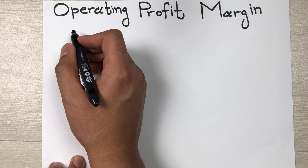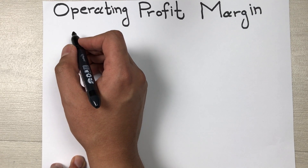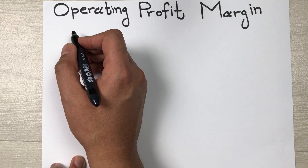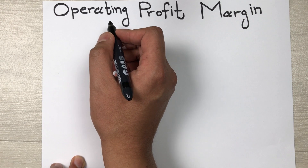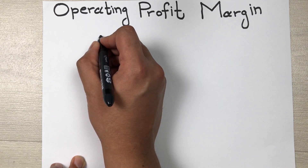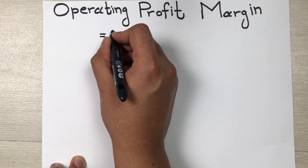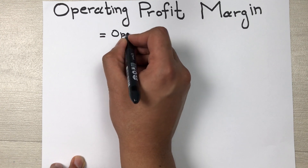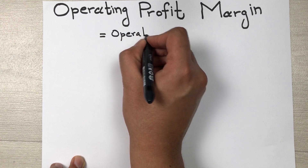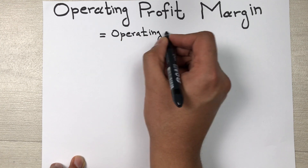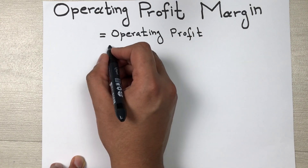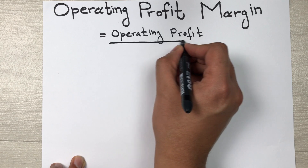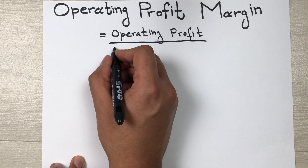Hello guys, I hope you are doing really well. In today's video I am going to show you how to calculate operating profit margin. The formula for operating profit margin is equal to operating profit divided by sales revenue,